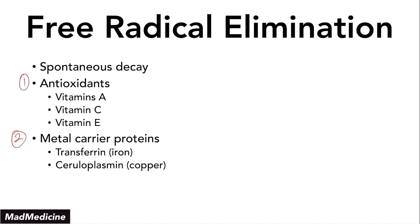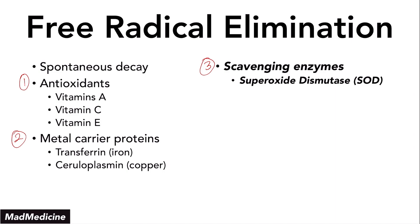The third way is having scavenging enzymes. This is very important because our body is able to prevent free radical damage from occurring by specifically dealing with the free radicals via scavenging enzymes. We have three scavenging enzymes to talk about: the first one is superoxide dismutase, the second one is catalase, and the third one is glutathione peroxidase.